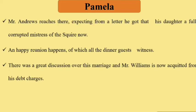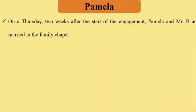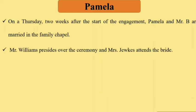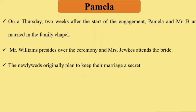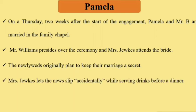There is a great discussion over the marriage and Mr. Williams is acquitted from his debt charges. On a Thursday, two weeks after the start of the engagement, Pamela and Mr. B are married in the family chapel. Mr. Williams presides over the ceremony and Mrs. Jewkes attends the bride. The newly-weds originally plan to keep their marriage a secret.